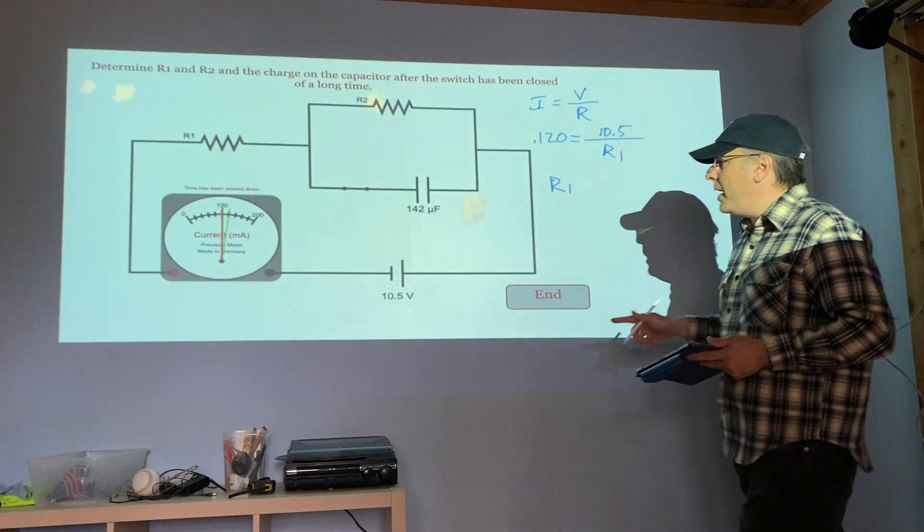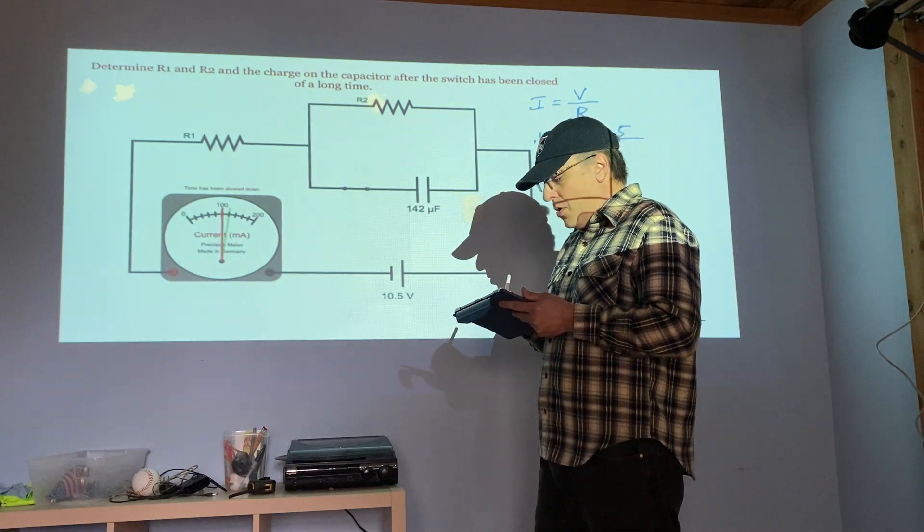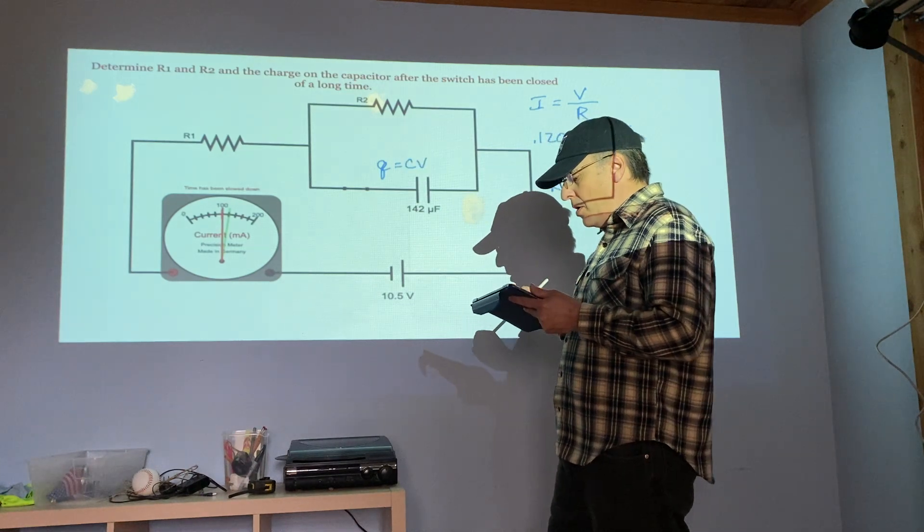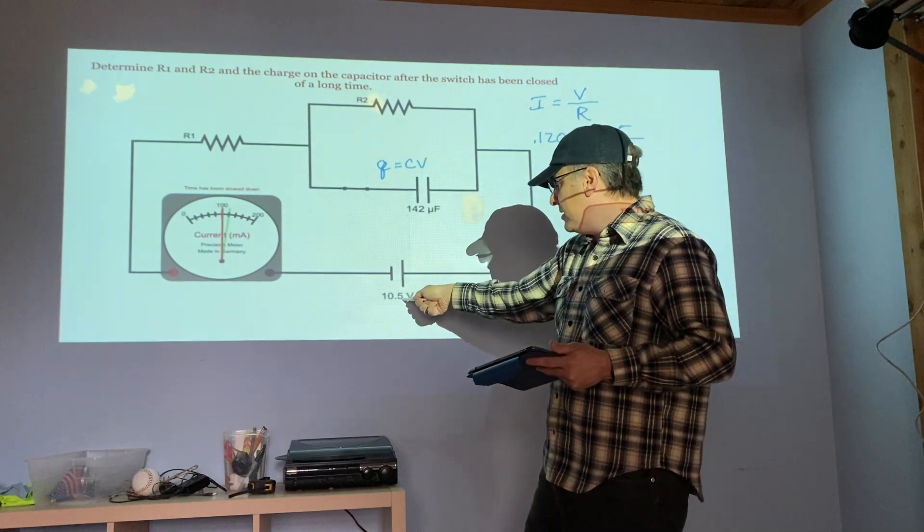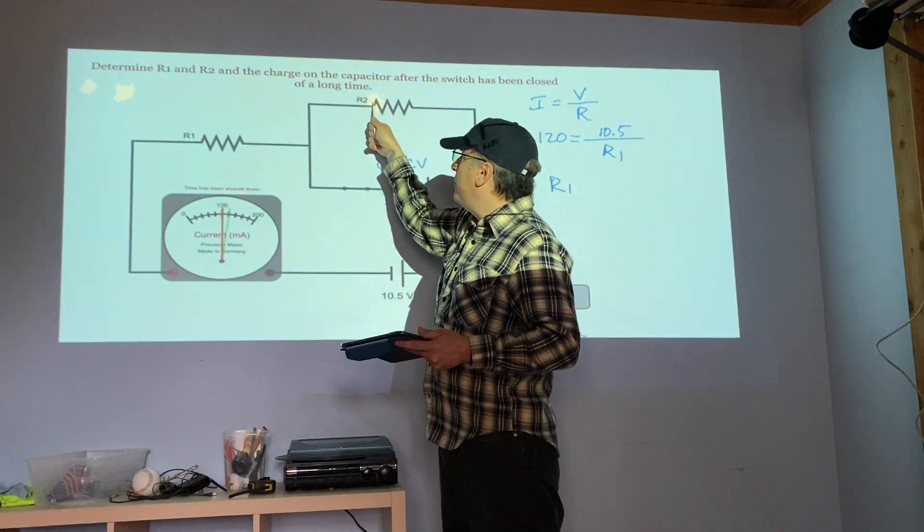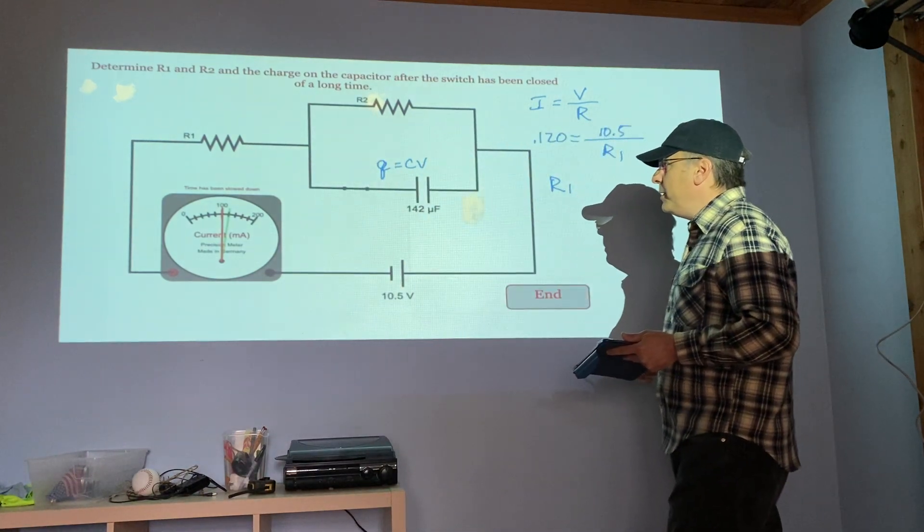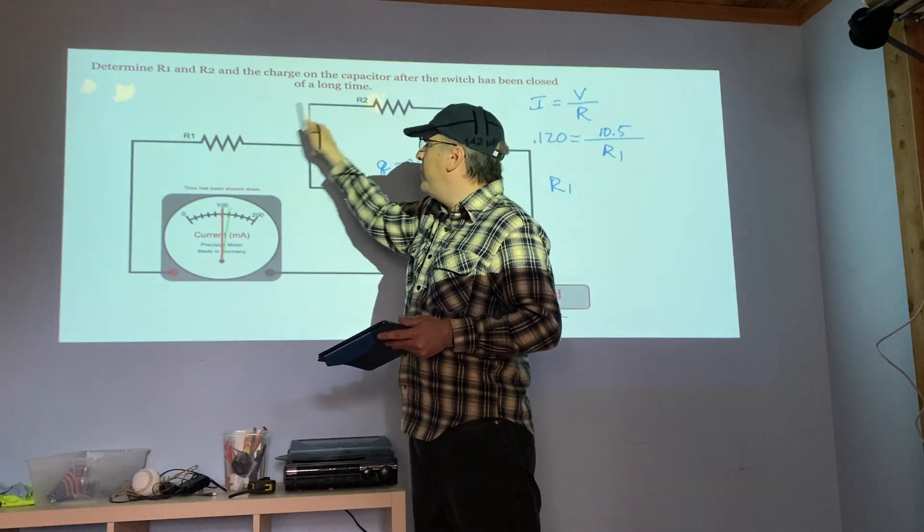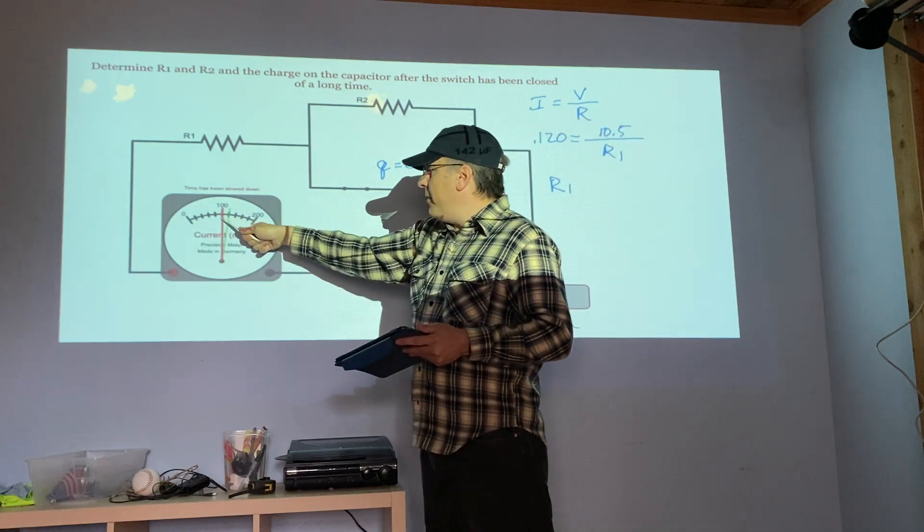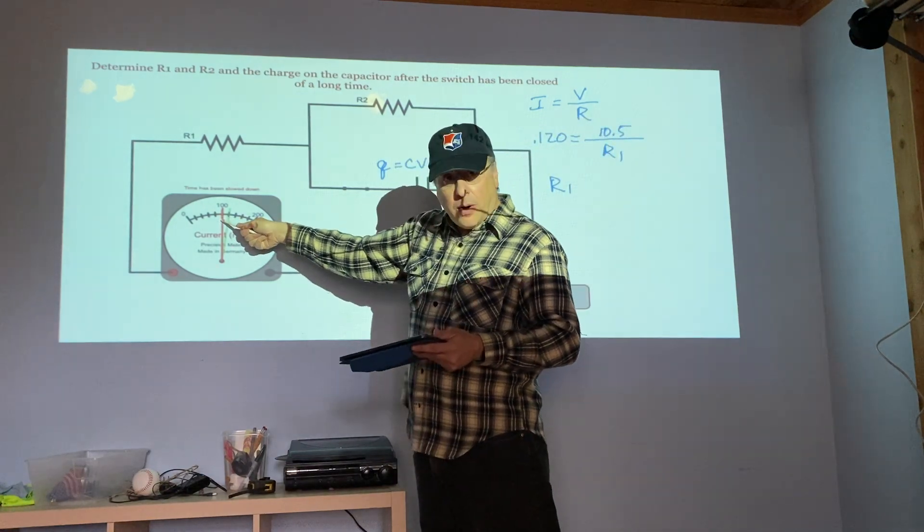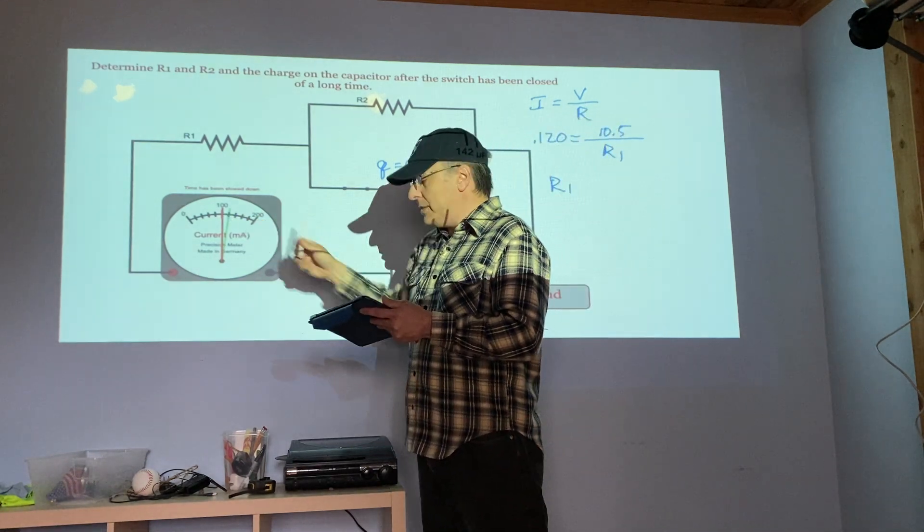The tricky part is getting the charge on this capacitor. We know that charge equals CV. We know the C value. The voltage is not this, this voltage is getting shared by these two resistors. So what you have to do is figure out how much voltage is on this guy and how much voltage is on that guy. We know the current right now, that's the red one, our steady state once this charges up. So we take this current.